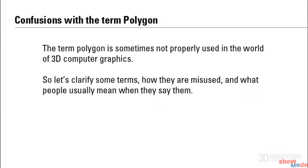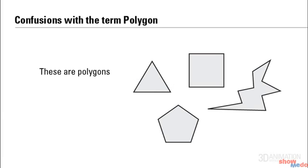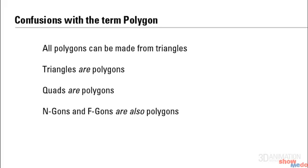The term polygon is sometimes not properly used in the world of 3D computer graphics. Let's clarify some terms, how they're misused, and what people usually mean when they say them. What you see before you are polygons. If you've taken geometry, this isn't going to be a surprise. A triangle is a polygon. A square, or a quad, is a polygon. A pentagon is a polygon. And this funky little shape we have here is also a polygon. All polygons can be made from triangles. Triangles are polygons, quads are polygons, and Ngons and Fgons are also polygons.